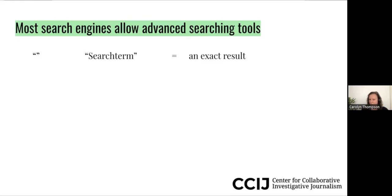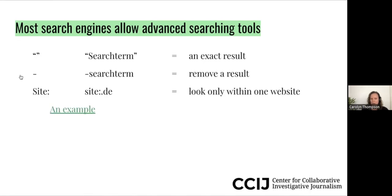The first thing is quotation marks — you put something in exact quotations, meaning you want this exact combination of words exactly the way it is. The next would be a minus, so you can take away any results that include a specific word. Another thing might be a site search — looking specifically at information that's only on one website. I'm going to give you an example of that.